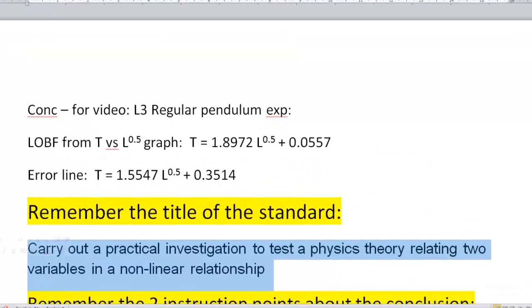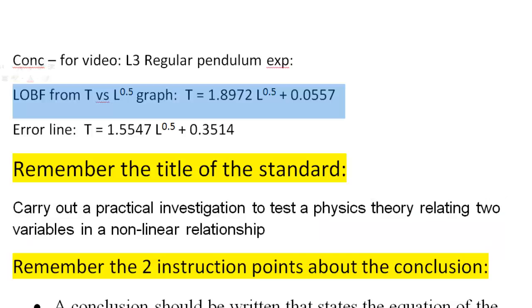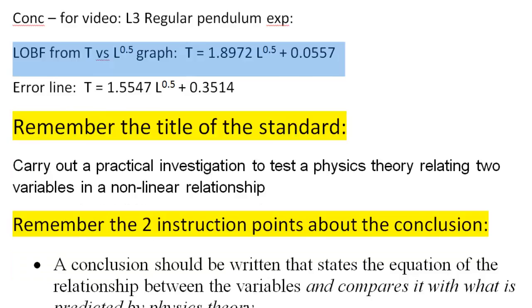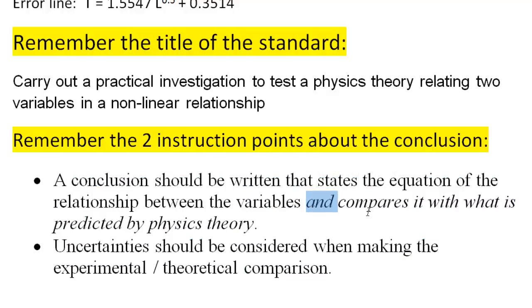The title of the standard is you actually carry out this thing to test a theory relating how two things fit together. So you found your formula based on your data. That's this formula up here. The instructions, again. The first set of instructions about the conclusion says you need a statement that includes your equation and the relationship between the two variables. And you need to compare this with what was predicted.